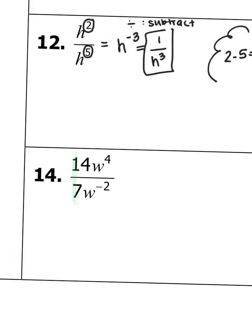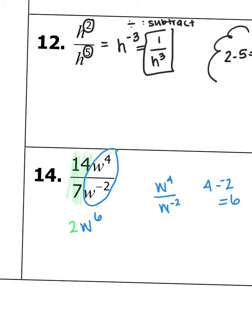For number 14, remember when you actually have numbers out front — these coefficients — you truly divide them. So 14 divided by 7 is 2. Then I have w to the fourth dividing w to the negative second: 4 minus negative 2 is 6. So I get 2w to the positive sixth power. Everything's positive, so it will stay just like that as our answer.